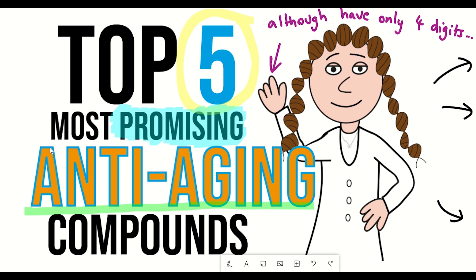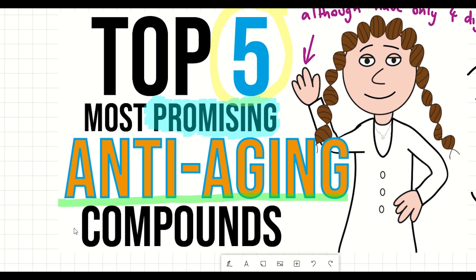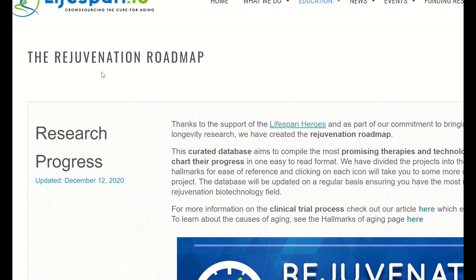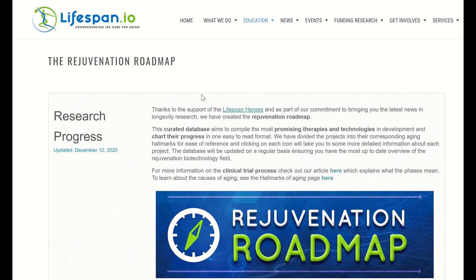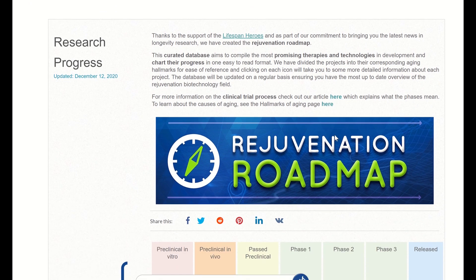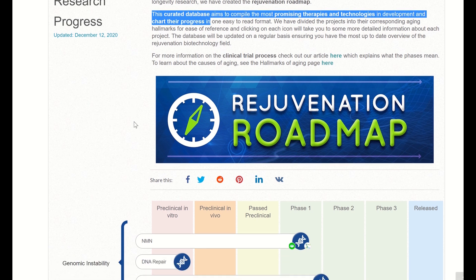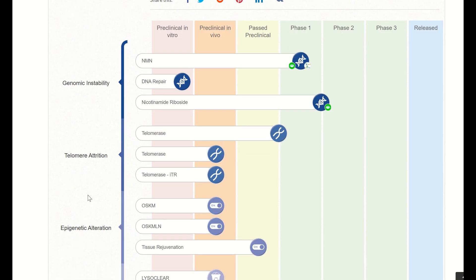If you find this video interesting, then I'm certain you're going to like the resource on the Life Extension Advocacy Foundation's website, whereby they have a rejuvenation roadmap that basically shows you quite nicely where different geroprotective agents are at in terms of their clinical process.